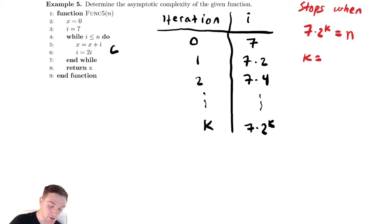k is equal to, divide by 7, take log base 2. So this is log base 2 of n over 7. I'm going to do a bit of arithmetic here just to prove a point. k equals log base 2 of n minus log base 2 of 7.